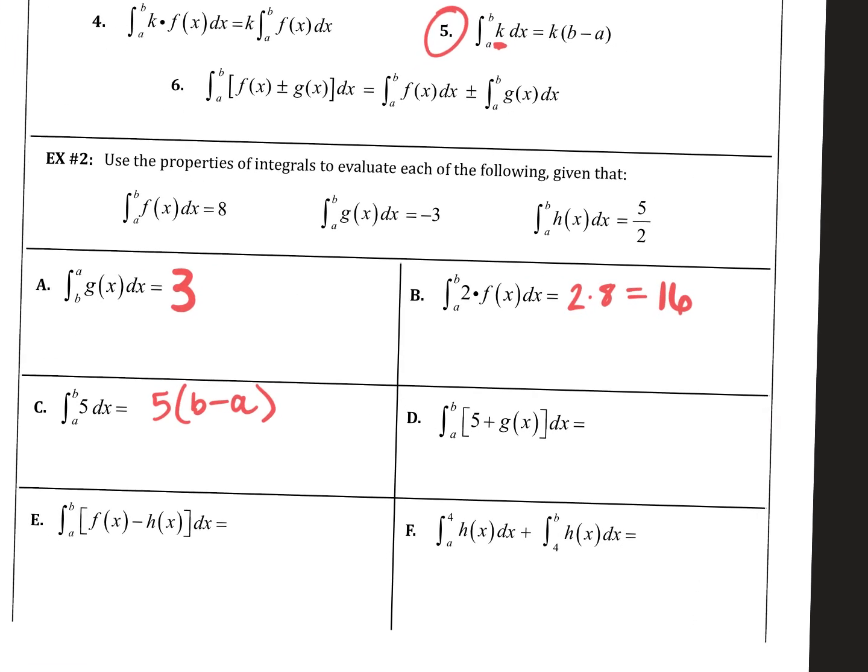So, no. Because you split it up, right? So it's from A to B of 5 plus from A to B of g(x). So we know that this is 5 times B minus A. And g(x) is 3. So that would be your final answer.